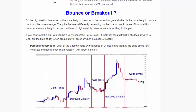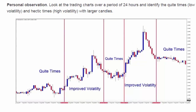You can determine bounce vs. breakout from observation — look at the charts and during quiet periods it's good to trade bounces back into the candle. In more volatile times it's better to trade breakouts out of the high or low of the previous candle. This EA gives you the opportunity to set the times when it should be bouncing and the times when it should be breaking out.